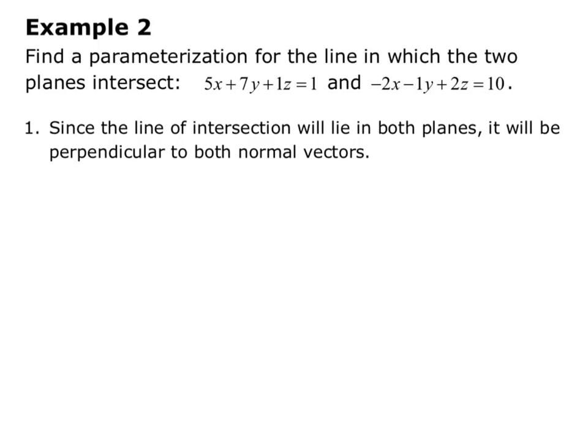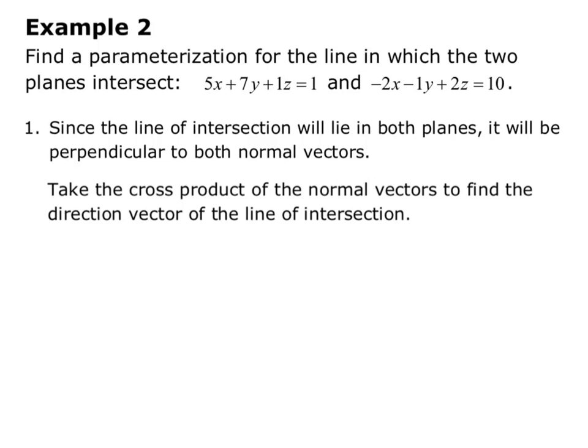Since the line of intersection will lie in both planes, it will be perpendicular to both of the normal vectors. So we can take the cross product of the normal vectors to find the direction vector of the line of intersection. Remember that the cross product is always perpendicular to both vectors that you're crossing. So if I cross both normal vectors, I'll get a vector that is perpendicular to both normal vectors, and therefore it lies in both planes.